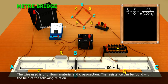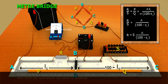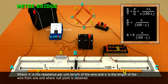R by S equals to l1 by 100 minus l1. R equals to S into l1 by 100 minus l1, where S is a resistance per unit length of the wire and l1 is the length of the wire from one end where null point is obtained.